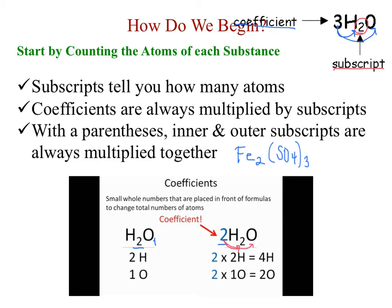The last thing that you need to understand is that when you see a parenthesis, the inner and outer subscripts will always be multiplied together. As seen in this example of iron 3 sulfate, I have 4 times 3, giving me 12 oxygen, and 1 times 3, giving me 3 sulfur. Of course, if I put a coefficient in front of that chemical formula, that would change my oxygen number to 24 and my sulfur number to 6. Remember that coefficients will always multiply by subscripts.